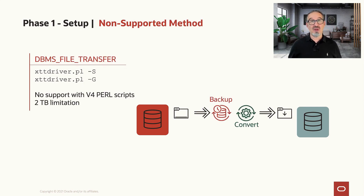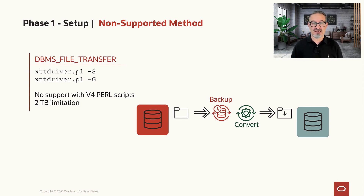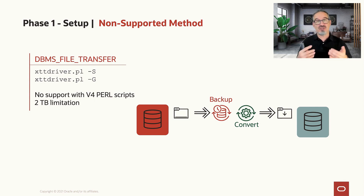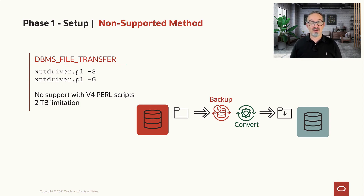The other method — which is officially no longer supported with the V4 scripts, even though it still works and is still in the code, but you don't get official support — is the DBMS file transfer method. In this case, we use XTD driver PL with uppercase S and uppercase G for the backup-and-convert phase and the restore. The benefit of the DBMS file transfer method is you don't need staging space, because it can do everything in one pass — the conversion happens as part of the process. This is quite convenient, but officially not supported with the Perl scripts anymore.